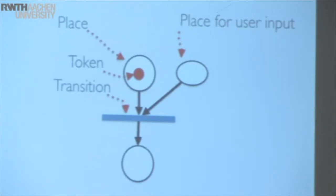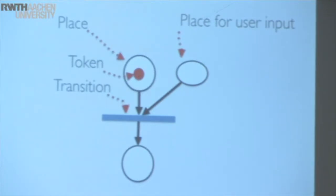It's actually the distribution of little tokens around the network that as a whole makes up the current state — that's something super easy to forget, but you will need this for the in-class exercise. This is a normal place. This is a special place where user input goes: if the user does something, we put a token in here modeling the user action. These places always go to a transition; they never go directly to another place — there are no arcs between places.